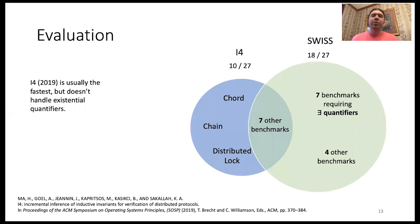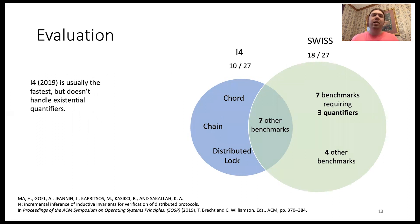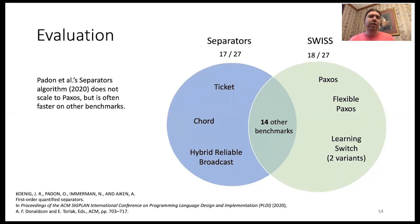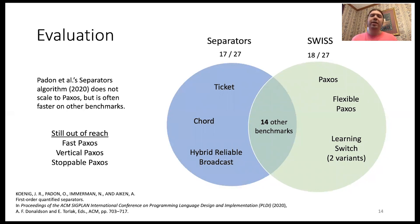We also did a comparative evaluation to previous invariant synthesis systems. Comparing to I4, SWISS solved many more benchmarks because it's able to handle those that require existential quantifiers, although I4 was much faster on benchmarks it could solve. Comparing to the separators algorithm, separators can handle existential invariants and handles many of the same benchmarks as SWISS, although it cannot scale to Paxos and flexible Paxos. In our paper, we evaluate the benchmarks SWISS is not able to solve and analyze what makes them hard, including some Paxos variants still out of reach of any current approach.